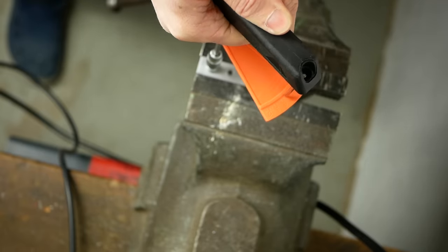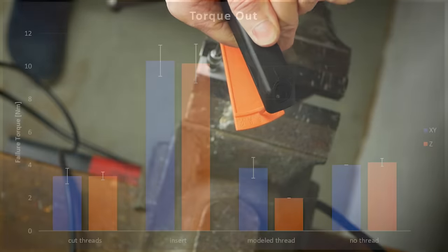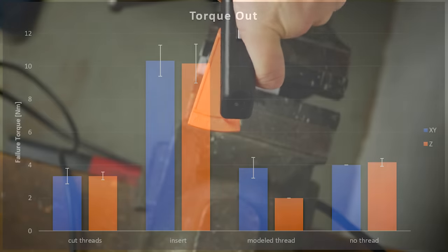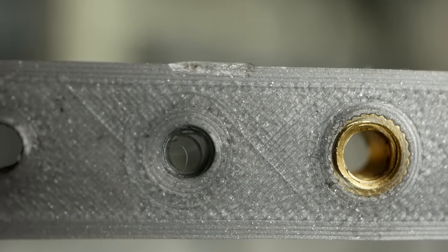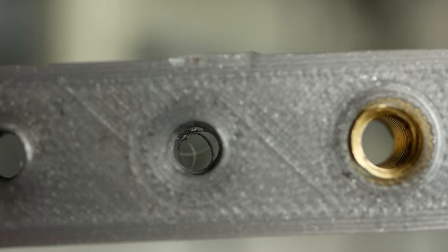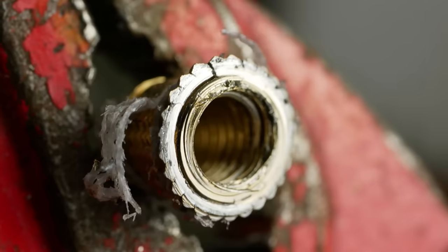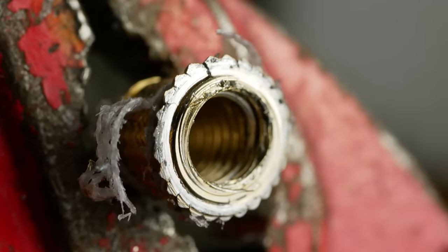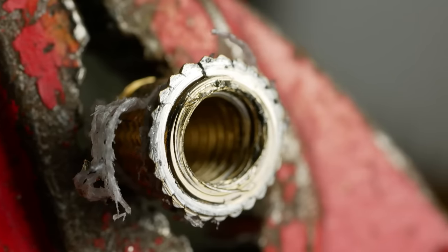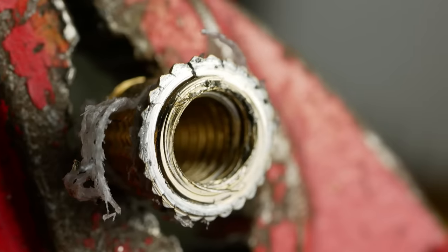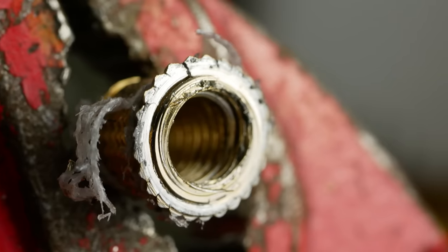In this test the threaded insert could really show where it shines and all samples averaged a failure torque of around 10Nm which is three times the load of the plastic threads. I really expected in this case that the insert is torqued out of the plastic but actually before that happened the brass insert itself failed which is really remarkable. This nicely shows that if you have a strong base part and really need a good threaded connection the inserts are the way to go.